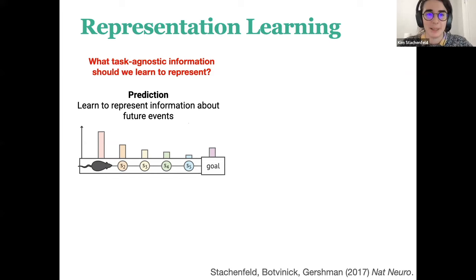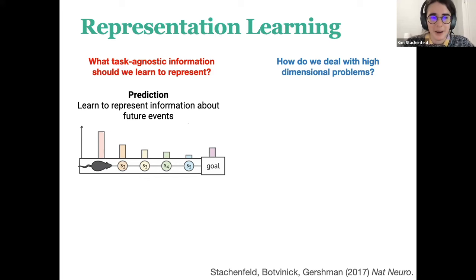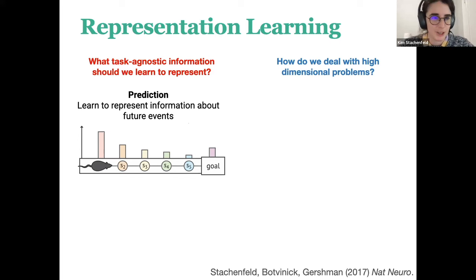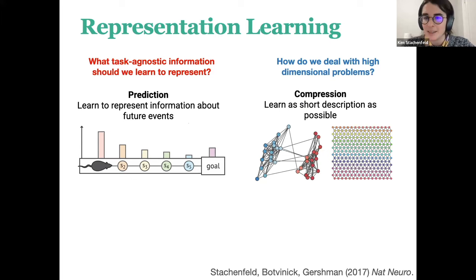The intuition is that predicting reward is a special case of predicting anything that could possibly happen. If you learn to predict as much as possible, your goal will probably be in the hull of things you've predicted. Of course, if you're learning everything about the environment, you now have a much bigger learning problem. So another big principle is compression — how can we learn a short description of the predictive dynamics we've learned? This might involve identifying clusters or low-dimensional structure.